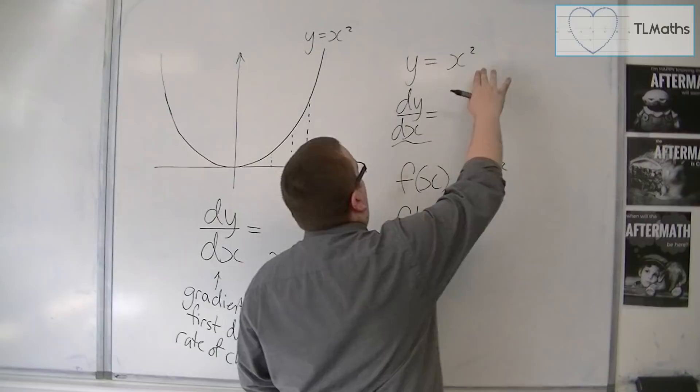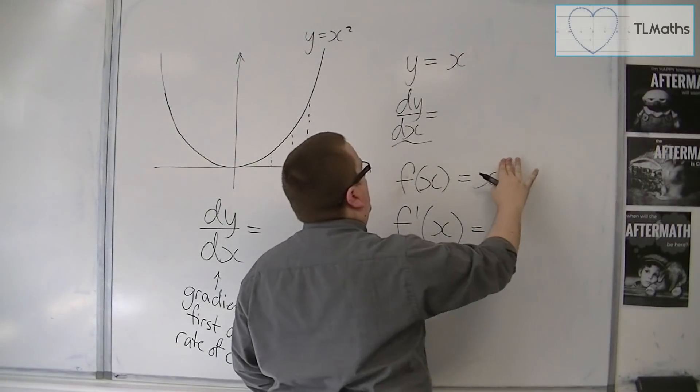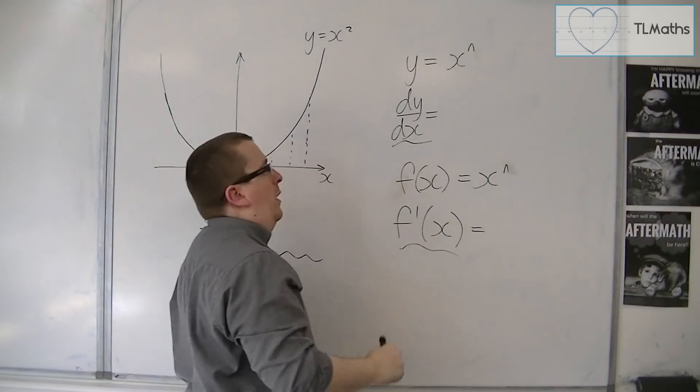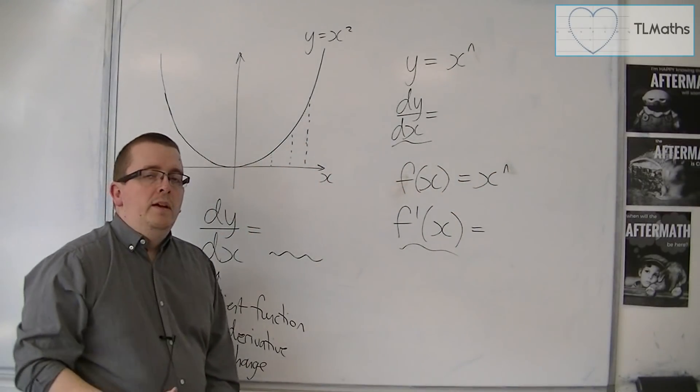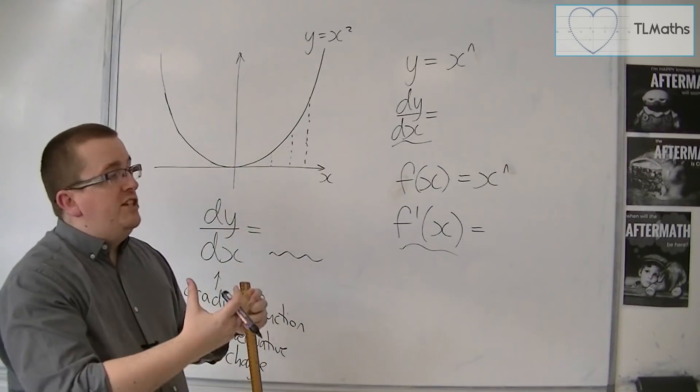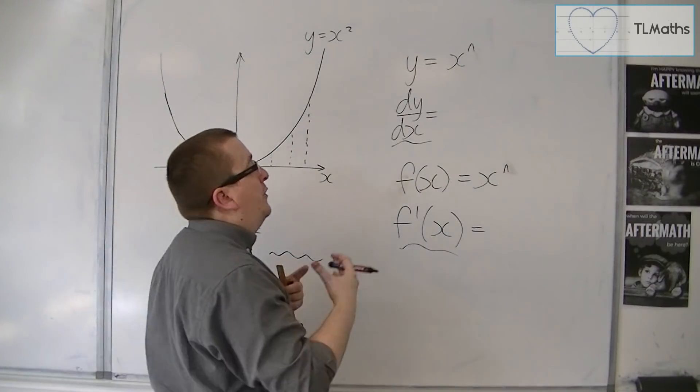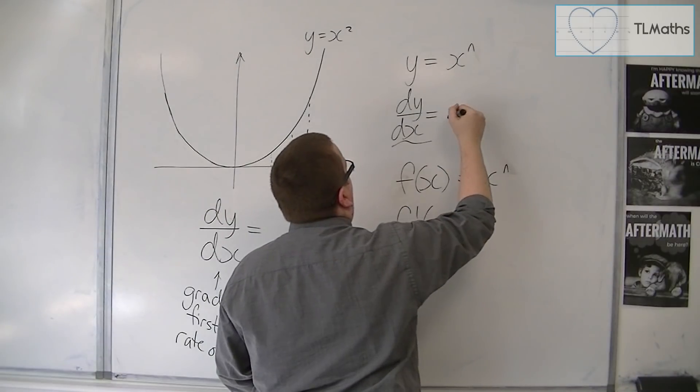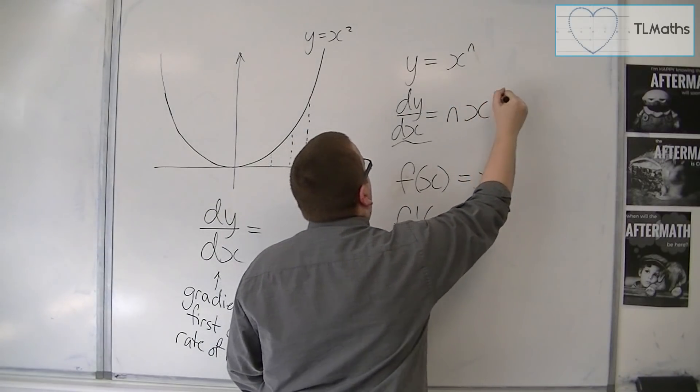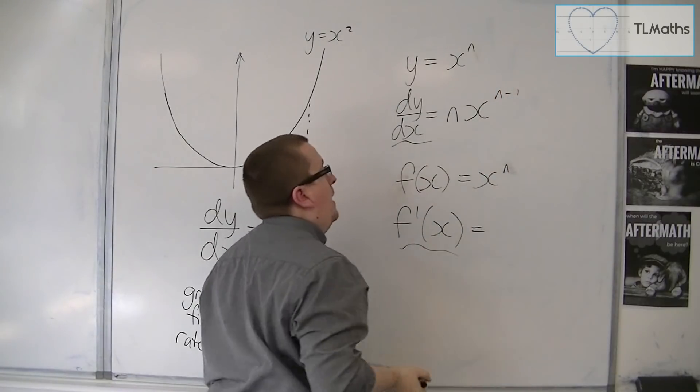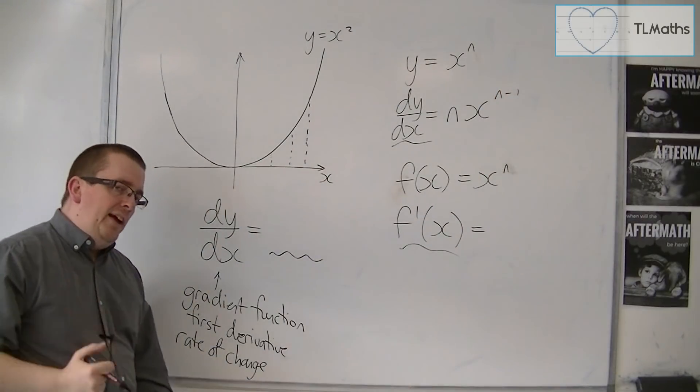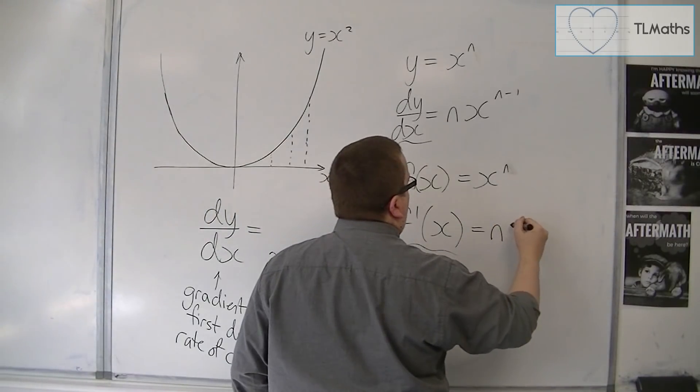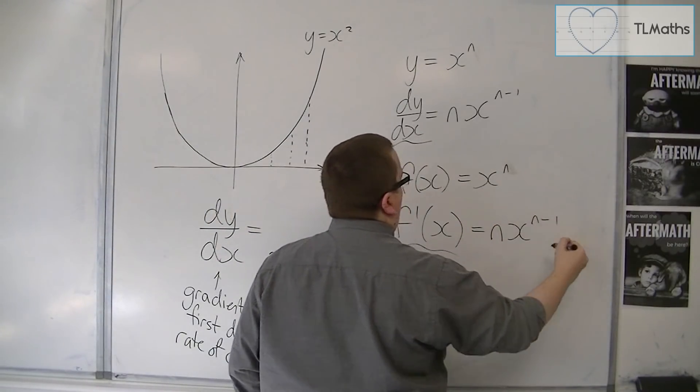So really, what I want to do is explain how do we get from x to the n to dy by dx or f prime. Because there is a general way to do this. And there is a pattern that comes from it where the n comes down to the front and you take 1 from the power. That's how you differentiate. You bring the power down to the front and take 1 off the power.